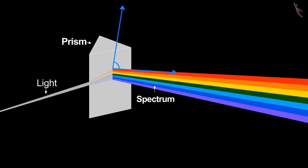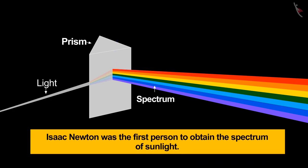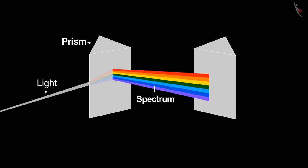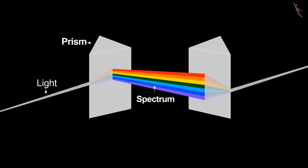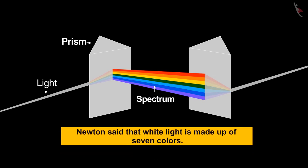Isaac Newton was the first person to obtain the spectrum of sunlight. He then used the second inverted prism to obtain the single beam of white light. Newton said that the white light is made up of seven colors.